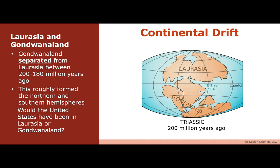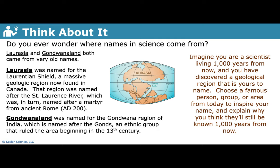So let's talk about Laurasia and Gondwanaland. Gondwanaland and Laurasia separated from each other about 200 to 180 million years ago — this is before Pangaea, by the way. They roughly formed the northern and southern hemispheres. Think about this: would the United States have been in Laurasia or Gondwanaland? Laurasia — you are correct.